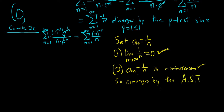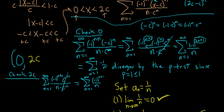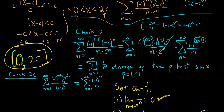Because it converges, we include 2c with a bracket. So the final interval of convergence is (0, 2c]. I hope this video is helpful to anyone out there trying to learn some mathematics. Good luck.